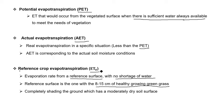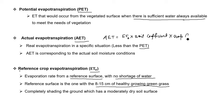Based on reference crop evapotranspiration, we may find actual evapotranspiration. Since actual evapotranspiration depends on the soil condition and type of crop, the formula is: Actual ET = Reference Crop ET × Soil Coefficient × Crop Coefficient.